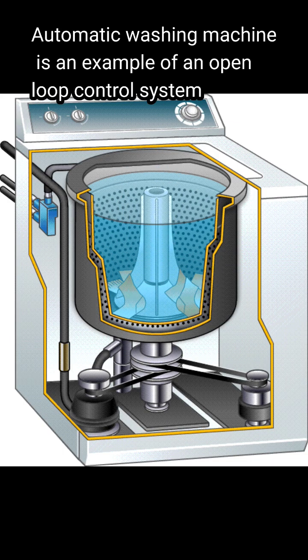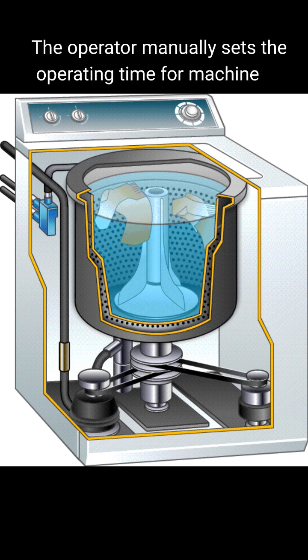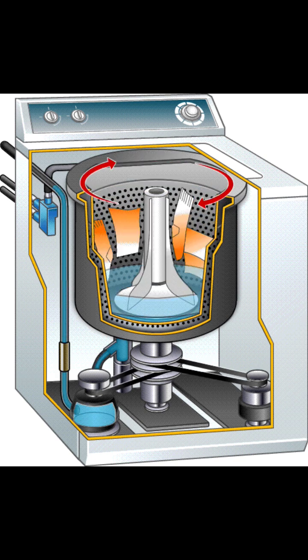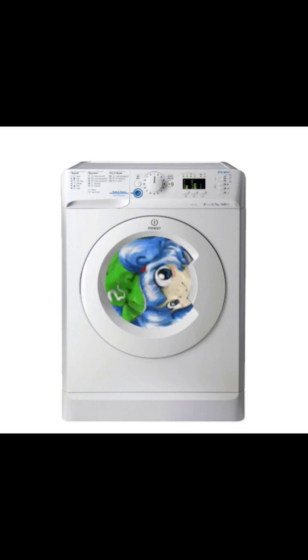An automatic washing machine is an example of an open loop control system in which the operator manually sets the operating time. The machine stops operating even if the desired cleanliness is not obtained.